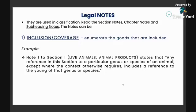The exception is 'except where the context otherwise requires.' If the context provided in the heading is specific — for example, if there is another subheading specifically for cubs — then you will classify cubs under that specific subheading. But if the young of that genus or species is not specifically indicated anywhere in the heading or subheading, then you will classify them under that of the adult of the genus or species.